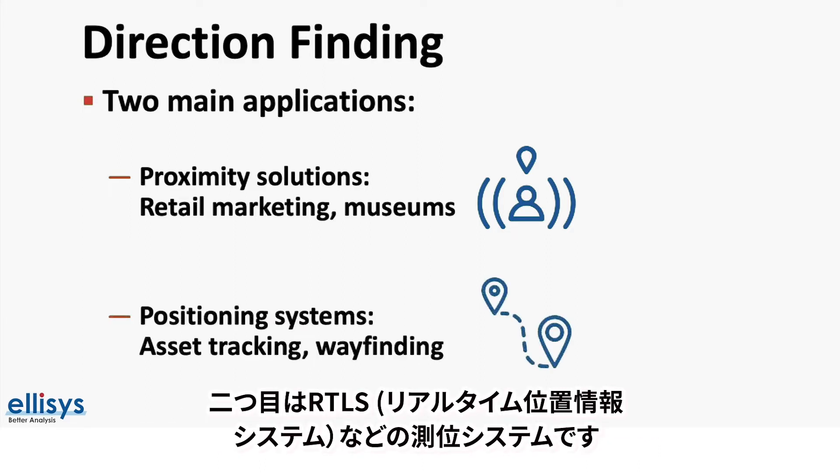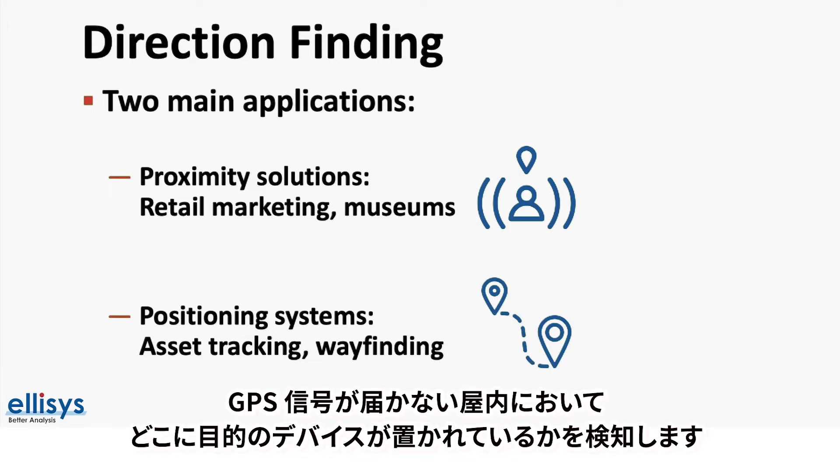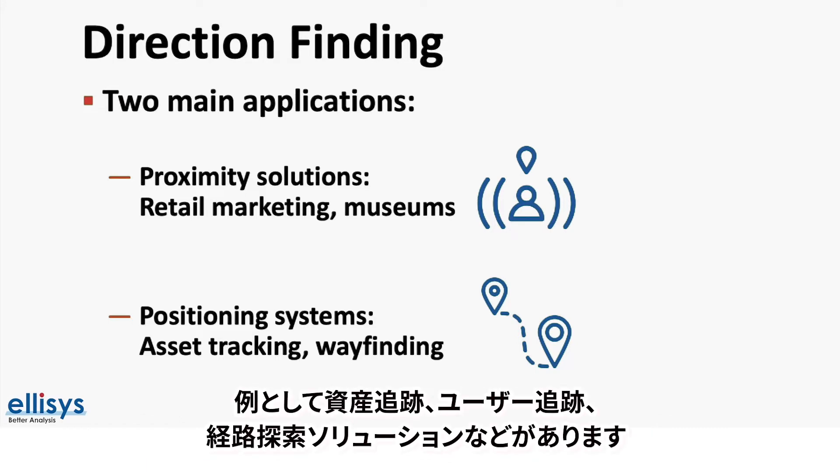Second, we have position systems, such as real-time locating services, or RTLS, which focus on understanding where devices are located within a space, usually indoors, where GPS does not work very accurately. Examples include asset tracking, user tracking, and wayfinding solutions.